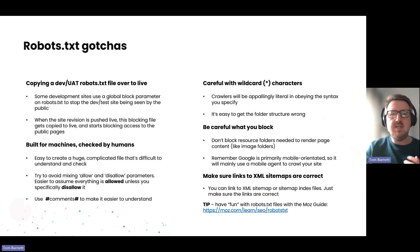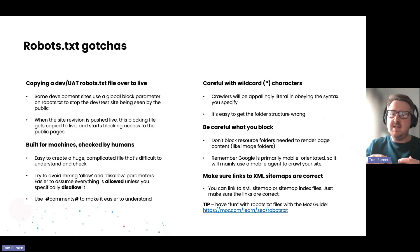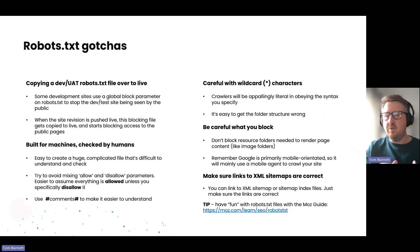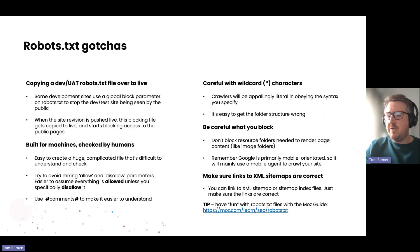Be careful what you block. Don't block critical resources for pages to load — don't block images, don't block things that a search engine will need to access in order to understand what content is on the page. Being overly cautious is probably the best way to be with your robots.txt file.